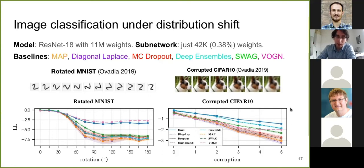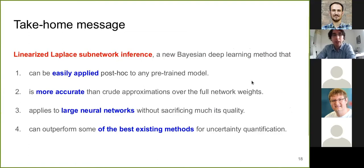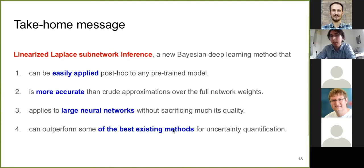This concludes the first part of the talk. The take-home message is that the linearized Laplace subnetwork inference method can be easily applied post-hoc to any pre-trained model. It seems to be more accurate than crude approximations over full network weights. It can apply to large neural networks without sacrificing much quality, and it can outperform some of the best existing methods for uncertainty quantification.